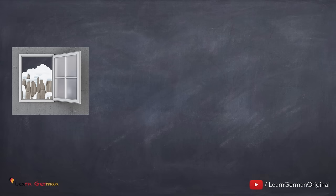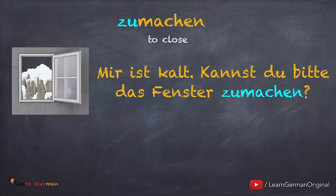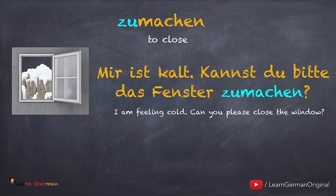The last verb is 'zumachen' — the prefix is 'zu'. Example: 'Mir ist kalt. Kannst du bitte das Fenster zumachen?' Here again, since we are using a modal verb, the trennbares Verb is in the infinitive at the end of the sentence.